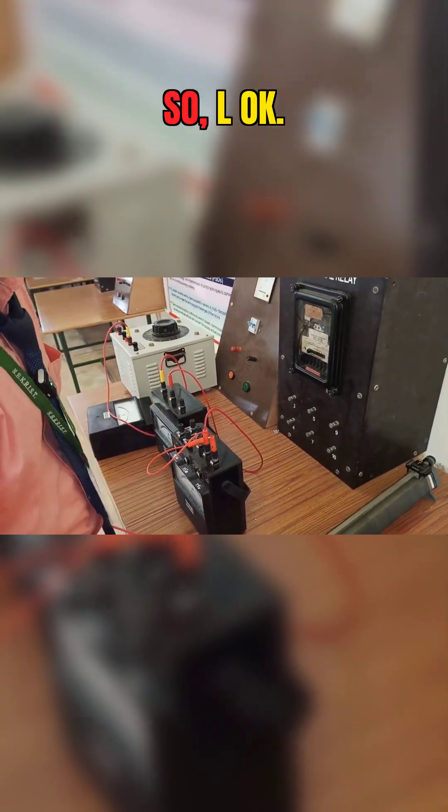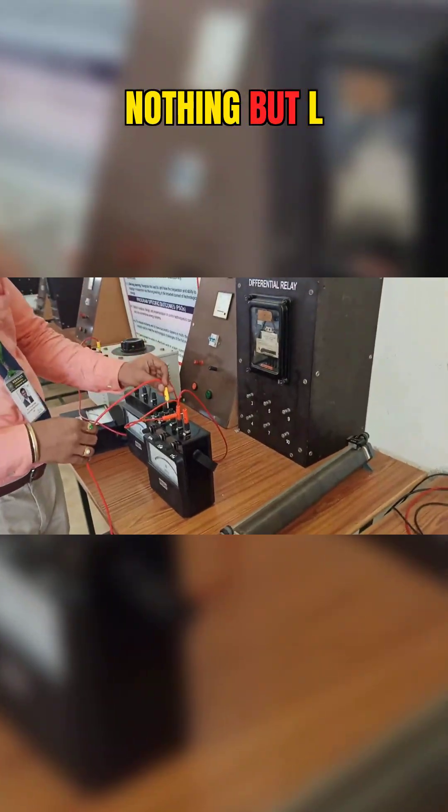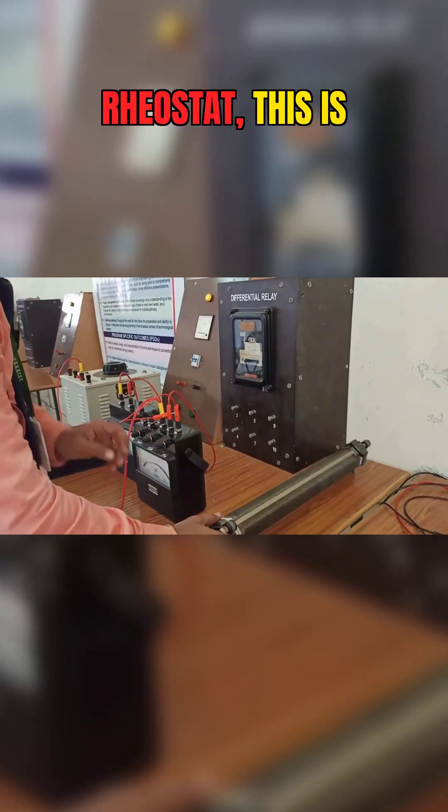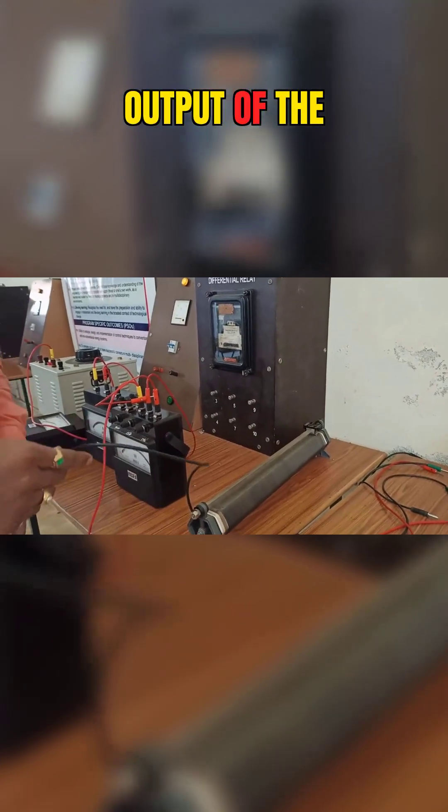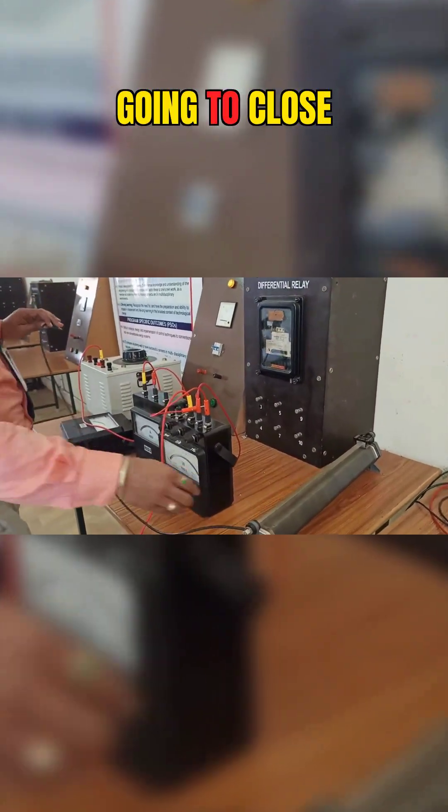From L it has to go to the load. L is connected to the rheostat. This is the input of the rheostat and this is the output. I am going to close this to make a closed path.